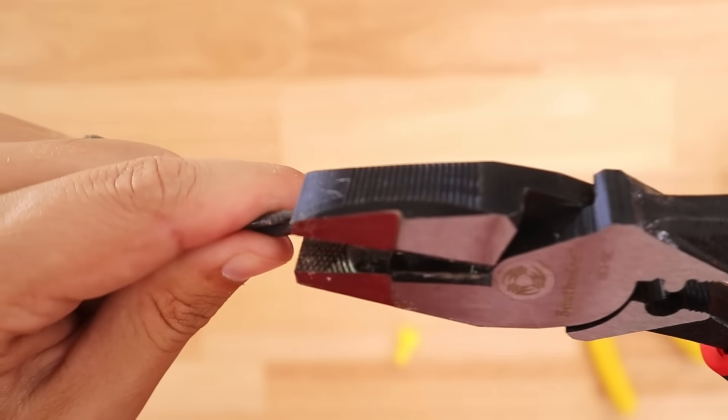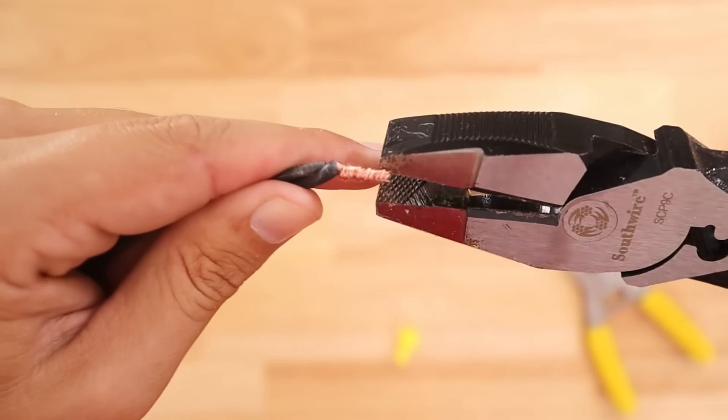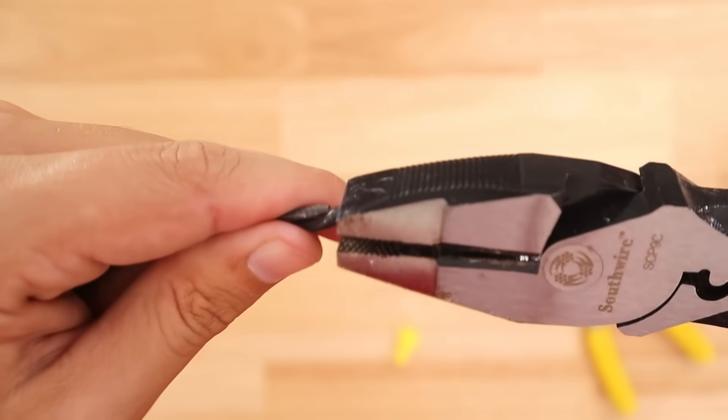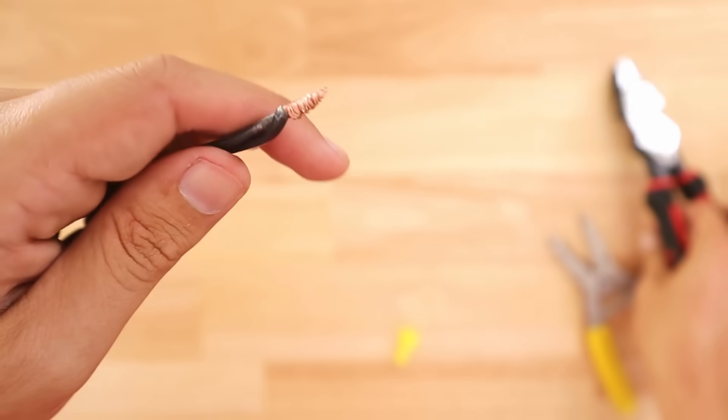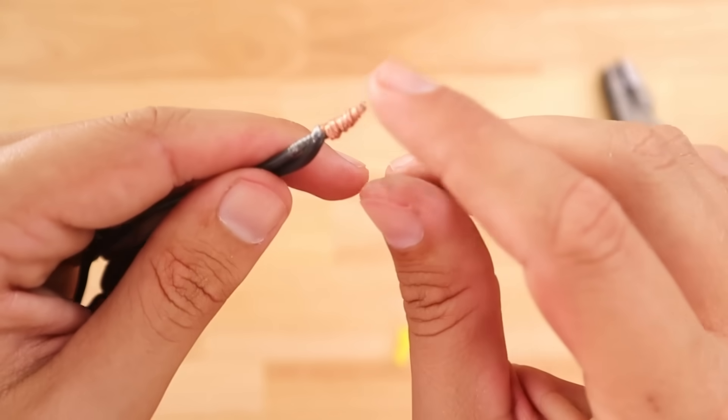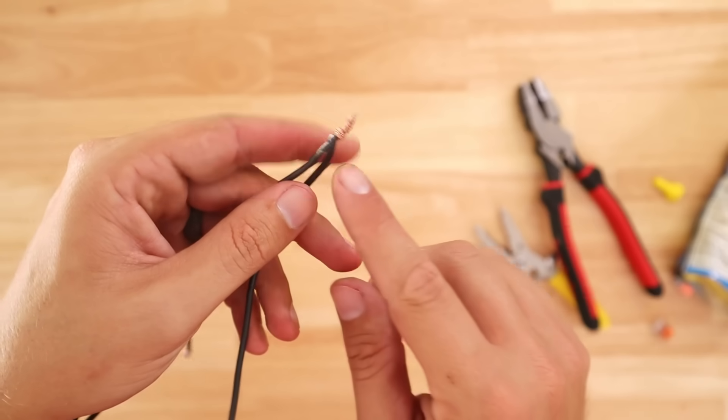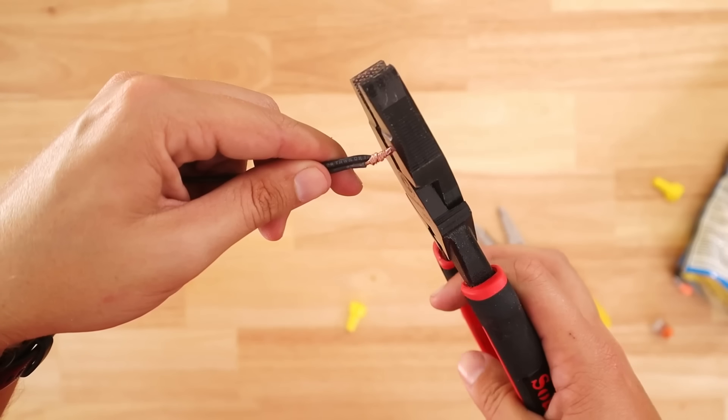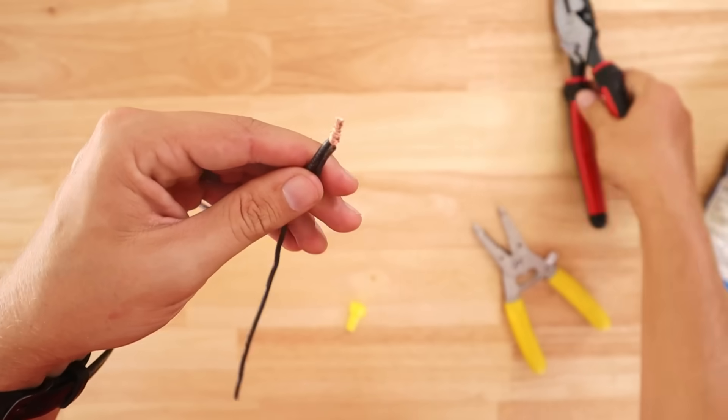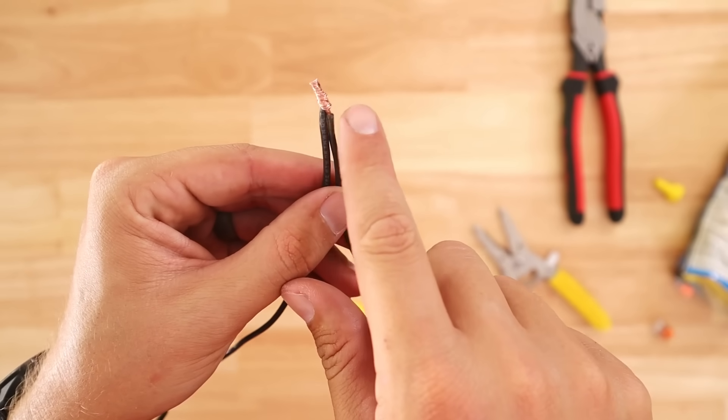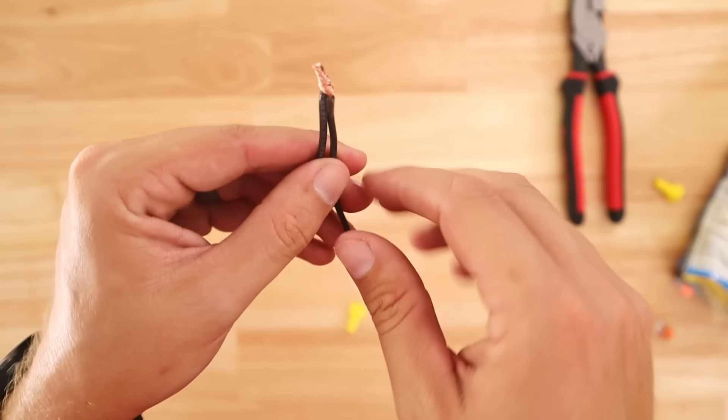And one thing to note is you do want to make sure not to tighten down too much when you're pre-twisting on the stranded because what can happen is these stranded wires are kind of flimsy and they could be easy to break off and therefore you would make your wiring a little bit weaker. Just going to clean it up a little bit.